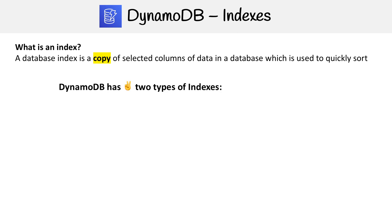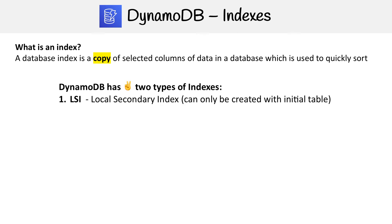DynamoDB has two types of indexes. We have LSIs, which stands for local secondary index, and these can only be created with the initial table. And then you have GSIs, which are global secondary index, and we're going to get into both of these in extreme detail.